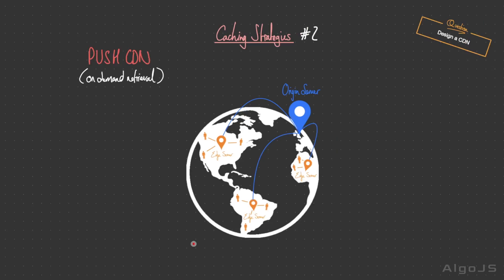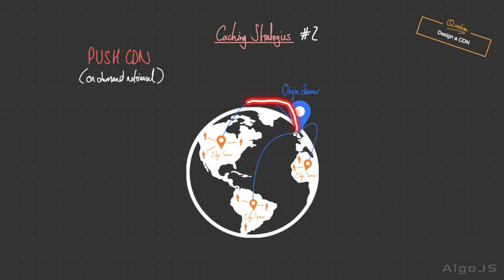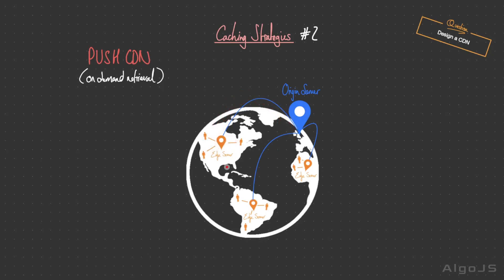The alternative caching strategy is a push CDN, which operates on the principle of proactively pushing or uploading content from the origin server to multiple edge servers in advance of user requests. The edge server stores all that content within its local cache, ready to be served to users without dynamic retrieval from the origin server. When a user makes a request, the CDN edge server serves the content directly from its cache, minimizing latency and accelerating content delivery.